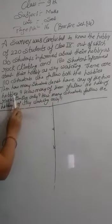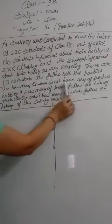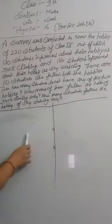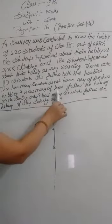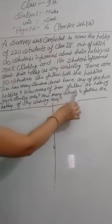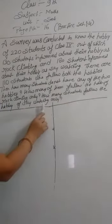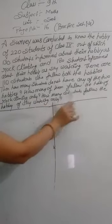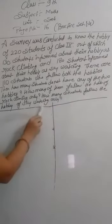We have to find: how many students do not have any of the two hobbies, how many students follow the hobby of rock climbing only, and how many students follow the hobby of sky watching.